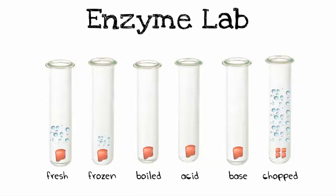Acid and base also got no bubbles — those extremes denatured the enzymes; acid and base eat things up. The chopped liver got tons of bubbles — some went all the way to the top of the test tube. The reason is that chopping the liver exposes more catalase by increasing the surface area, which increases the amount of catalase working. So that's why all those bubbles formed — a lot of catalase activity.